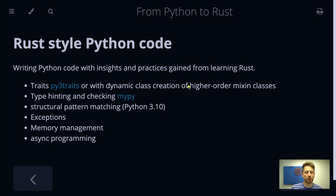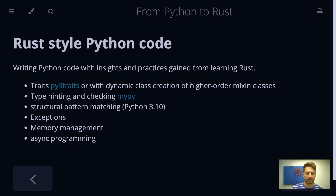Let's hop into the higher-order mixing class example, and this should give you an idea of how you could think about using the dynamic programming features that Python provides to implement something like a trait.